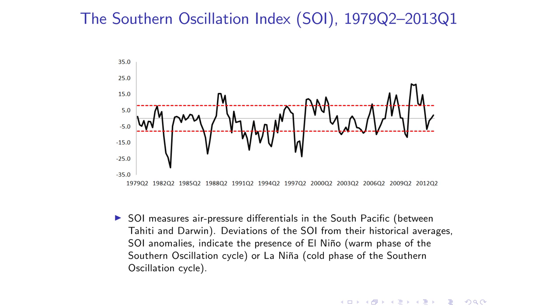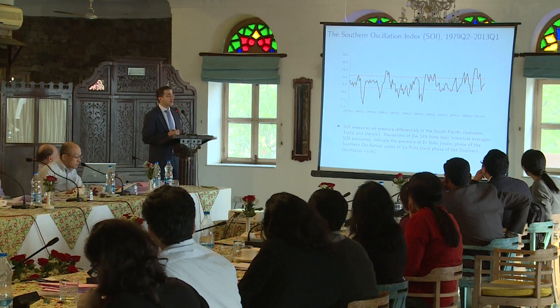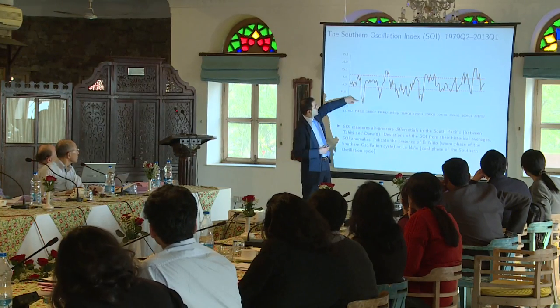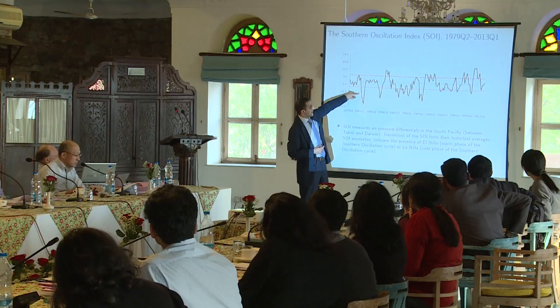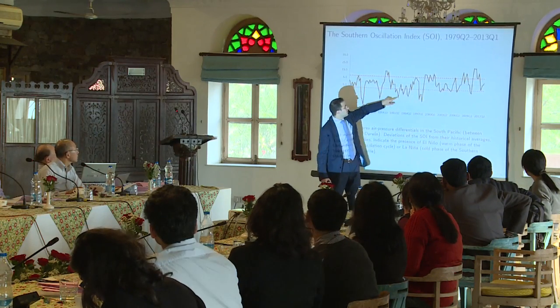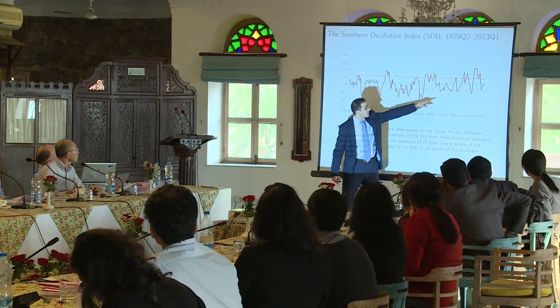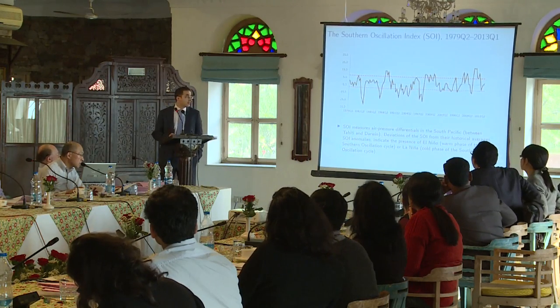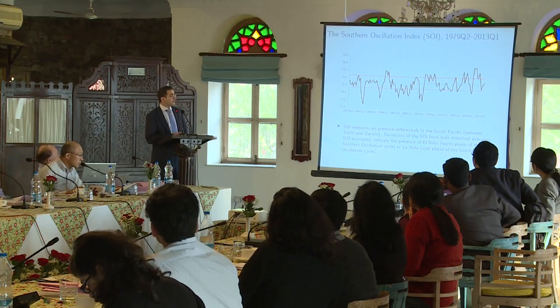Just a quick indication of what El Niño years look like: if the index is below minus 0.8, this is classified as an El Niño year. So 1982–83 was a very bad year, and 1997–98 was also a bad year. We've had some moderate years recently that haven't been as severe as expected. Basically, what we're going to do is use this exogenous variation and map it into the global economy to see what happens in individual countries. That's our contribution.